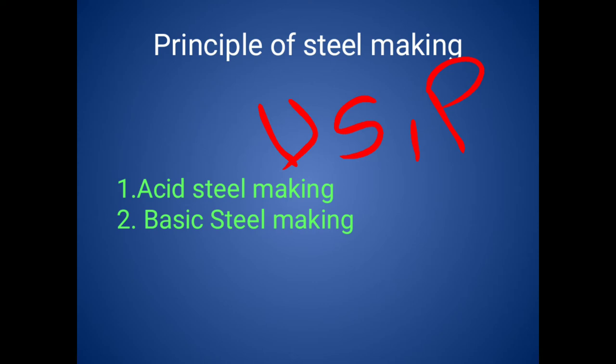Coming to basic steel making — this process is used to remove sulfur as well as phosphorus. In acid steel making we are unable to eliminate sulfur and phosphorus, that's why we use pig iron with very low content of sulfur and phosphorus. In the basic process, we eliminate sulfur, phosphorus, silicon, manganese, and carbon, so we get purer steel in the basic steel making method.